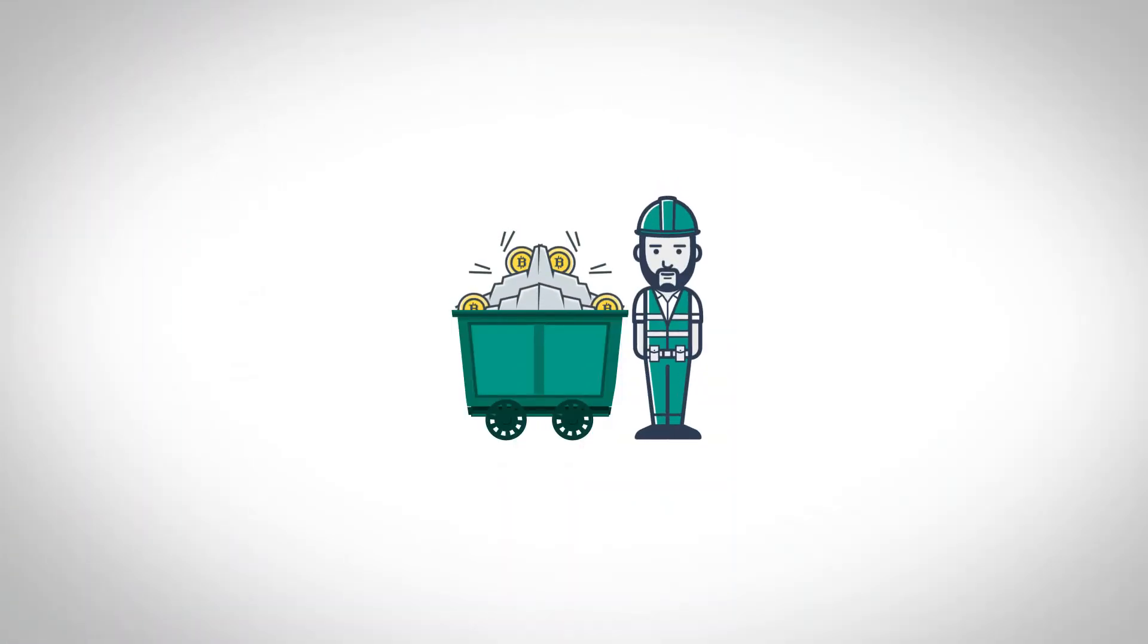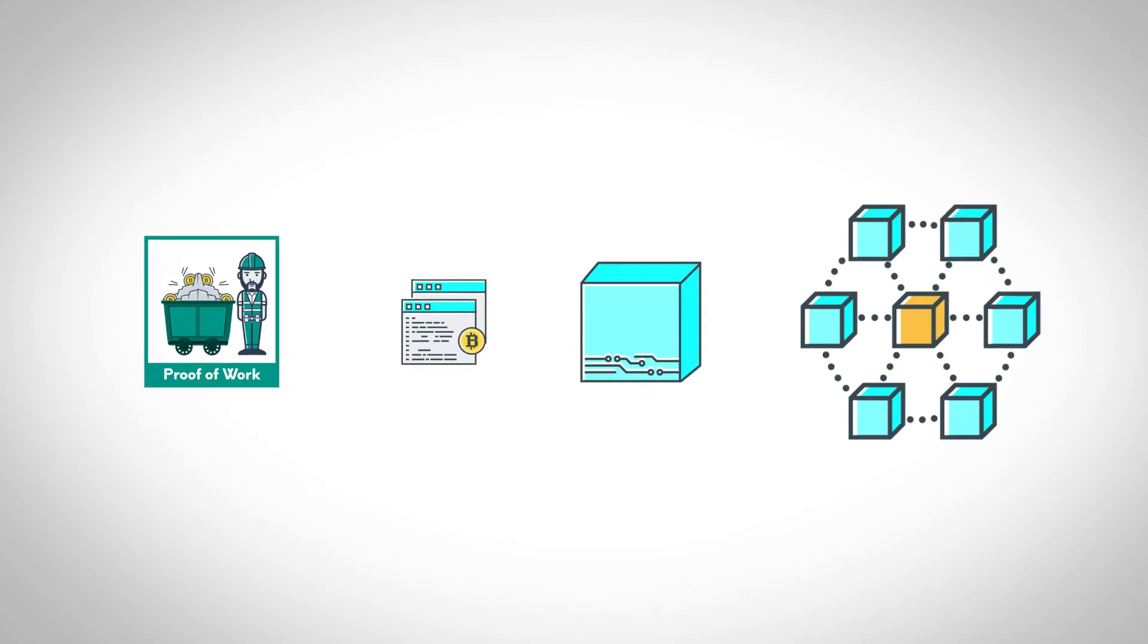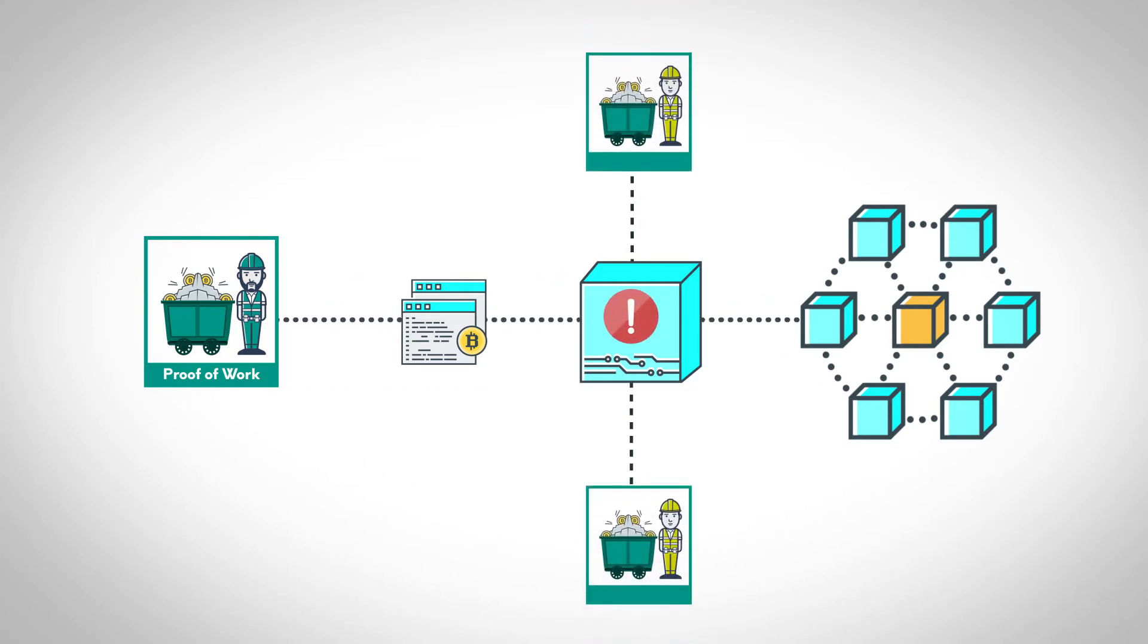Networks with miners rely on a computational puzzle called proof-of-work. When the proof-of-work is solved, the solver is allowed to issue the next block using the rules of the network. If they issue an invalid block, other participants will reject it and the reward will be lost.